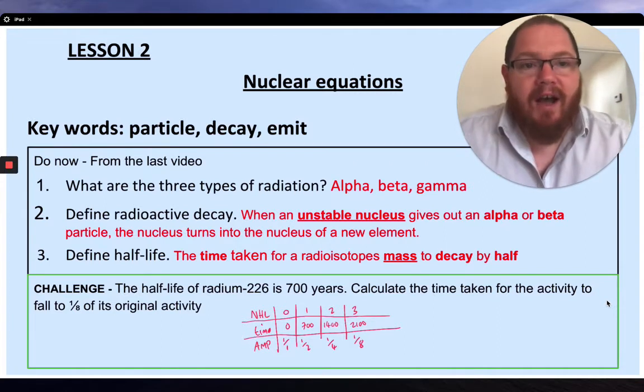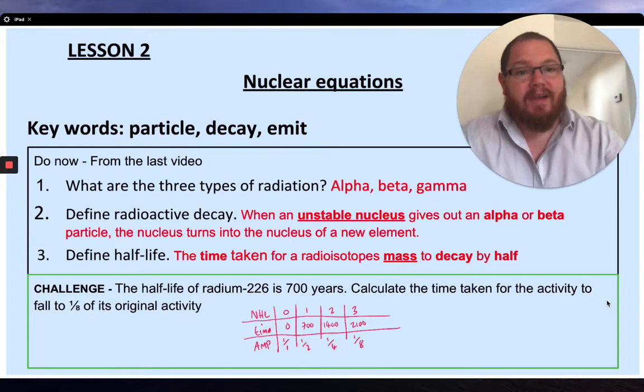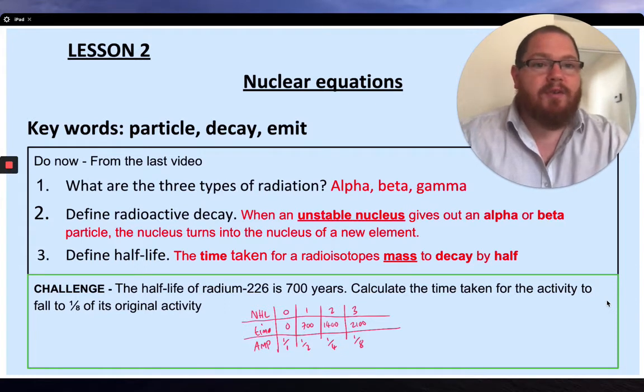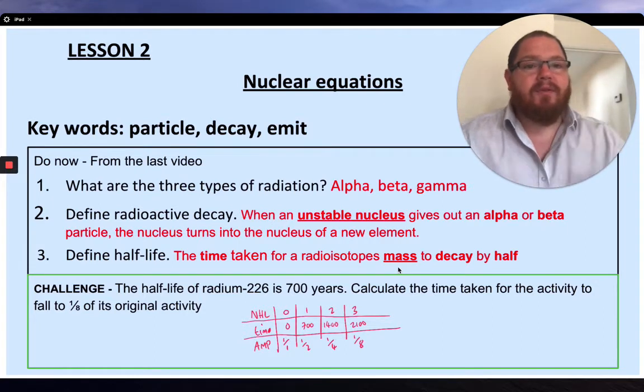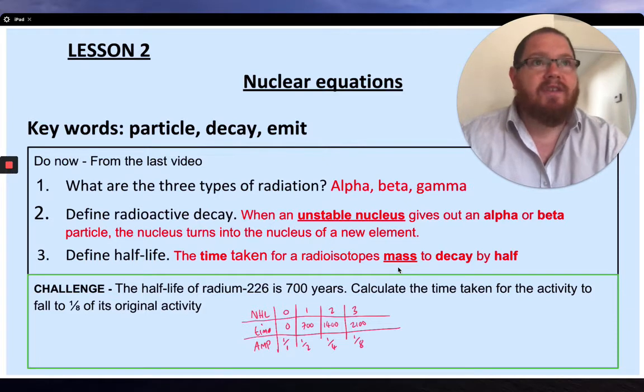Another big one, define half-life. Half-life is the time taken for a radioisotope's mass to decay by half. And we're going to leave it to mass for now until we get through the year because then it could be changing to a couple of other things. But for now, the time it takes for a radioisotope's mass to decay by half.